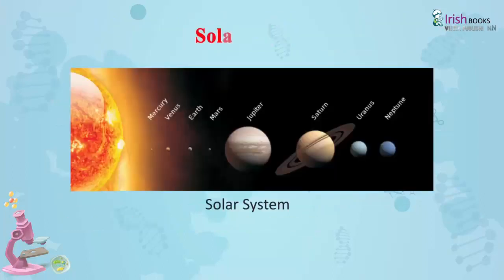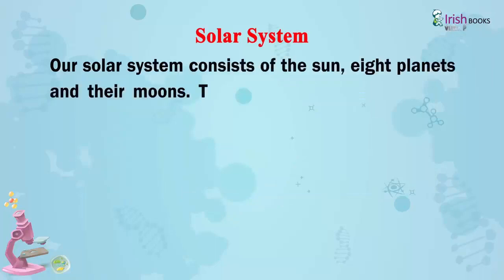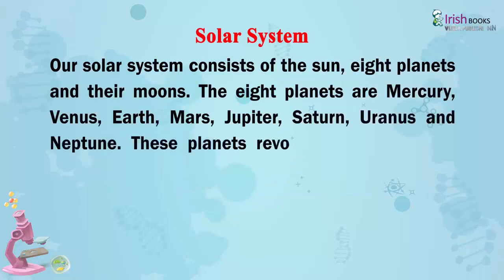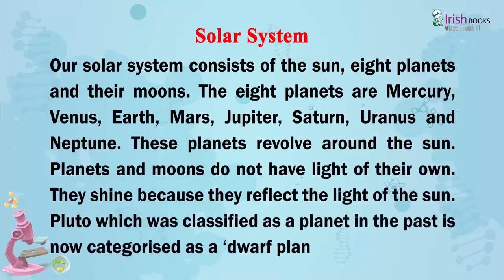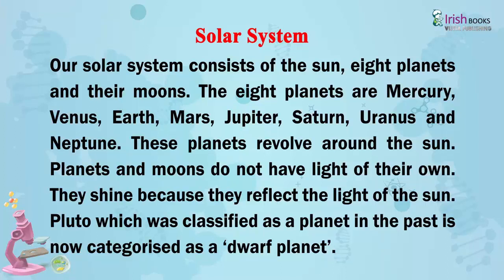Solar System. Our solar system consists of the sun, eight planets and their moons. The eight planets are Mercury, Venus, Earth, Mars, Jupiter, Saturn, Uranus and Neptune. These planets revolve around the sun. Planets and moons do not have light of their own. They shine because they reflect the light of the sun.